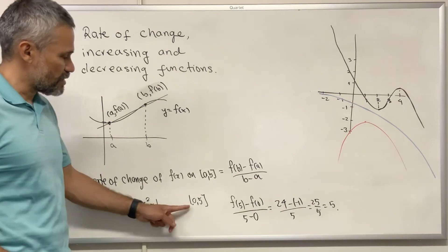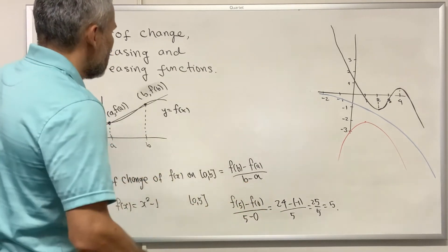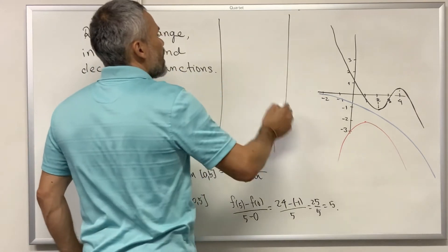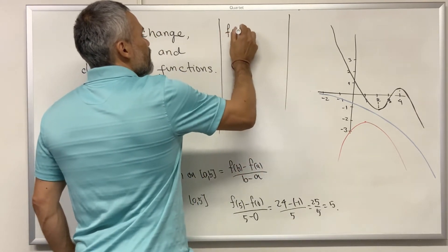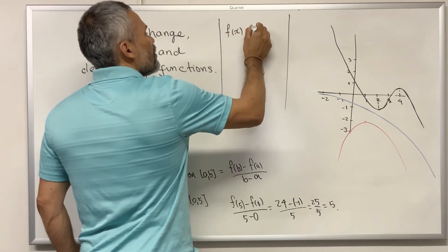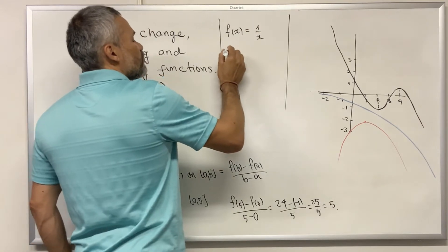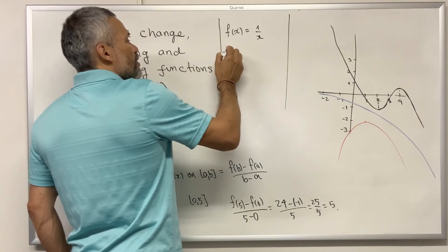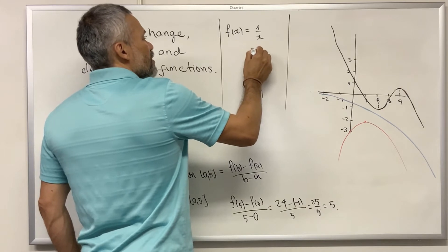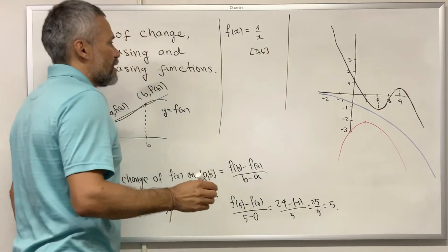And this is equal to five. So the rate of change of this function on this interval is five. Let's see another example: if we have f(x) equal to one over x and we want to compute the rate of change on the interval [3, 6].